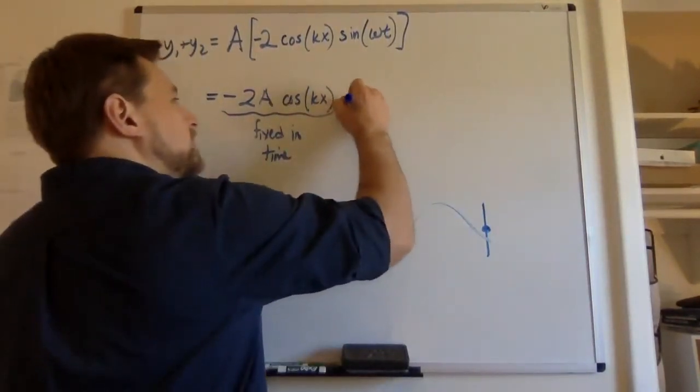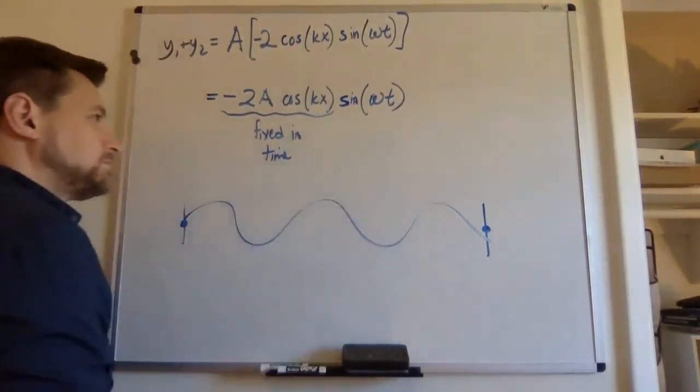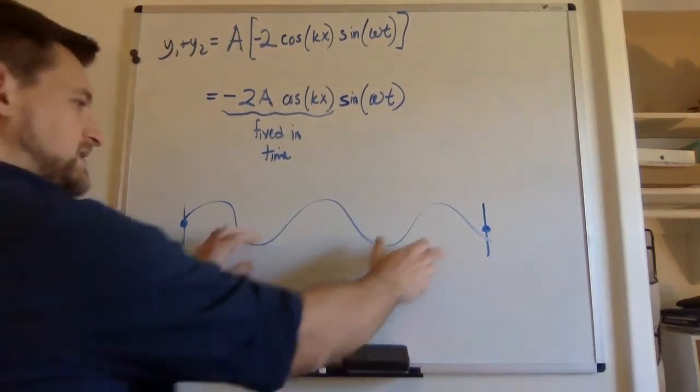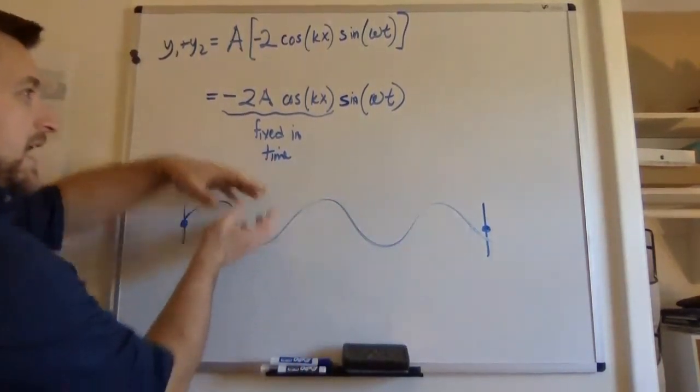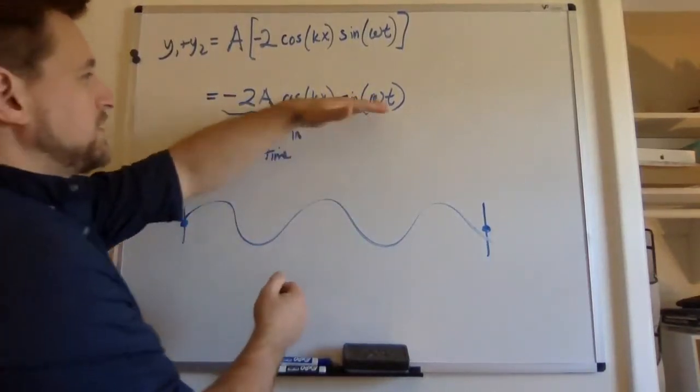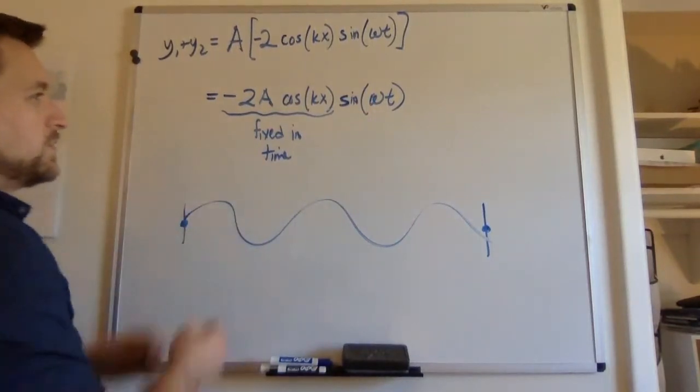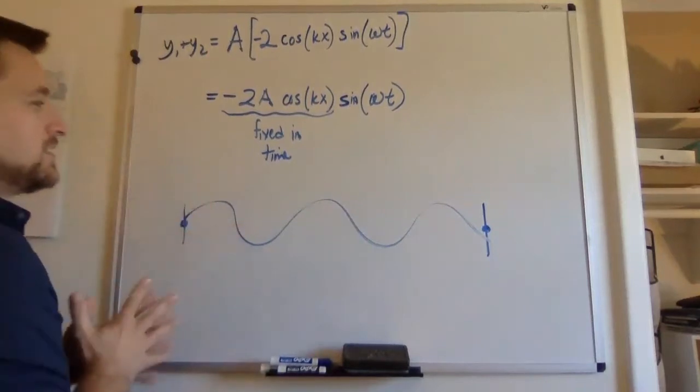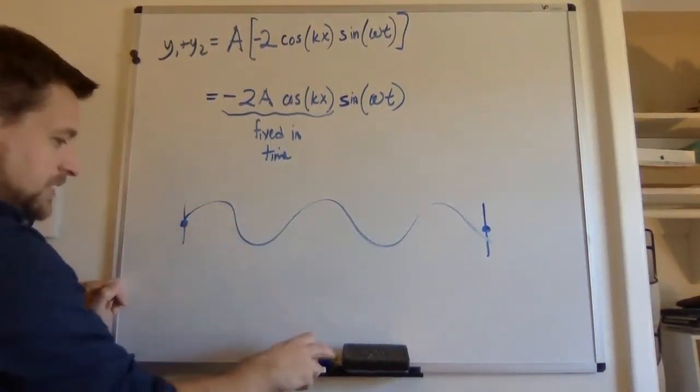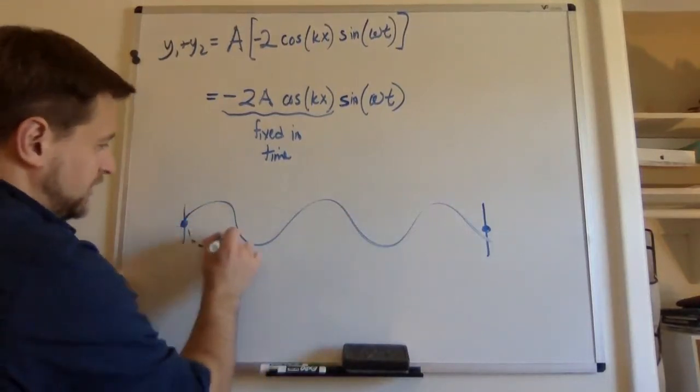And then we multiply all of it by sine ωt. So all that does is take this shape and multiply it by something between one and zero and negative one. So we take this shape and scale it according to one, zero, negative one. We multiply this by negative one, we could end up with a shape like this.